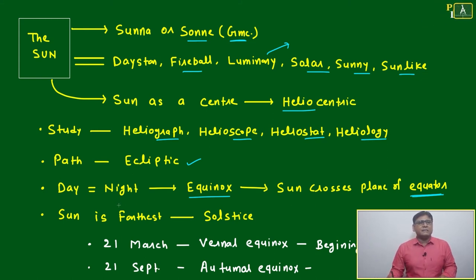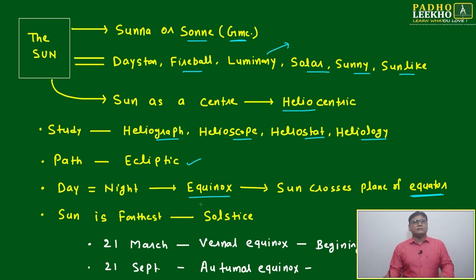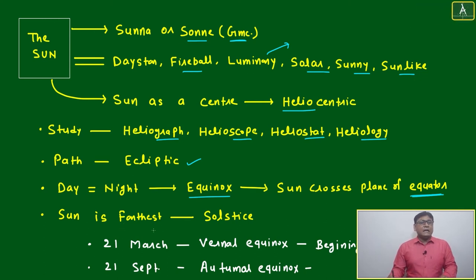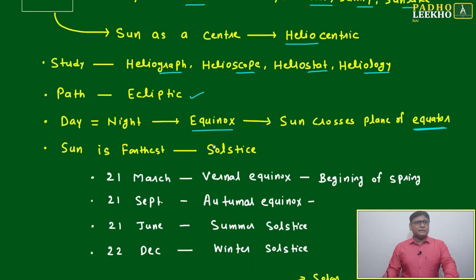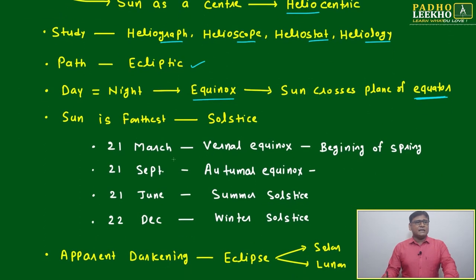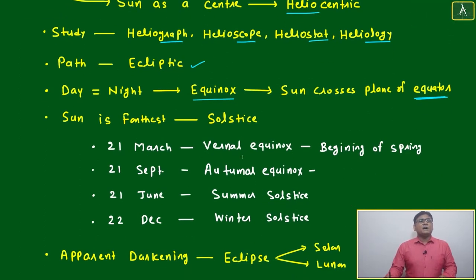Equinox means the sun crosses the plane of the equator — when day will be equal to night. When the sun is farthest, we say it is a solstice, for example on 21st March.